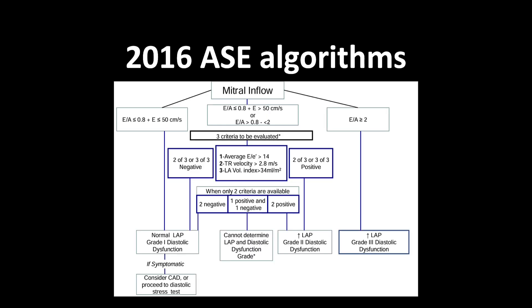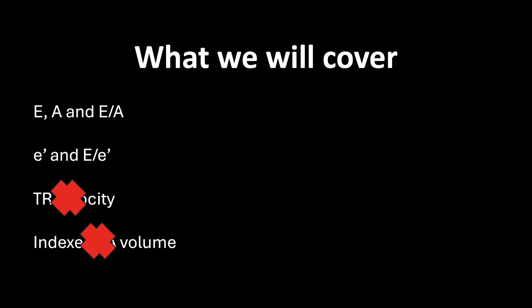If diastolic dysfunction is present, the next step is to quantify its severity. Today we will focus on deriving and understanding the following values: E, A, E over A, E', and E over E'. We will not be covering peak TR velocity or indexed left atrial volume.